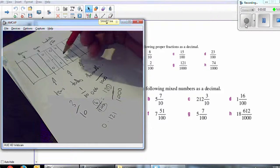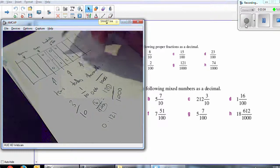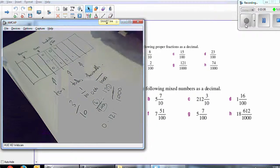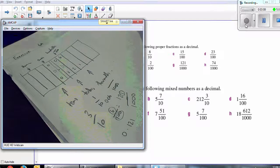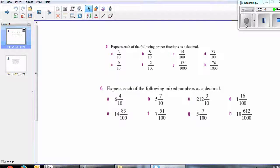So if you don't really understand decimals, get yourself, just draw one of these up. They're very straightforward to draw up. In question six, it asks us to express each of the following mixed numbers as decimals.